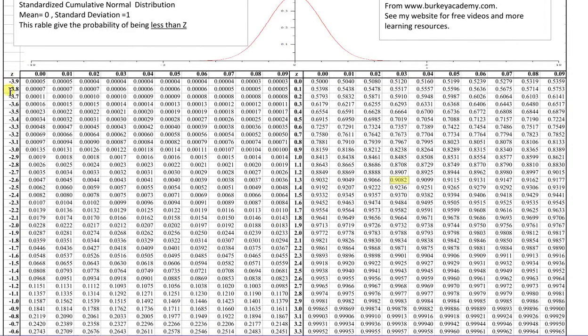So, keep in mind that the z-scores are listed in this first column and first row for the negative ones, and in this column and in this row for the second digit for the positive ones. And we're going to be looking for a positive z-score because we're looking for a number bigger than average.